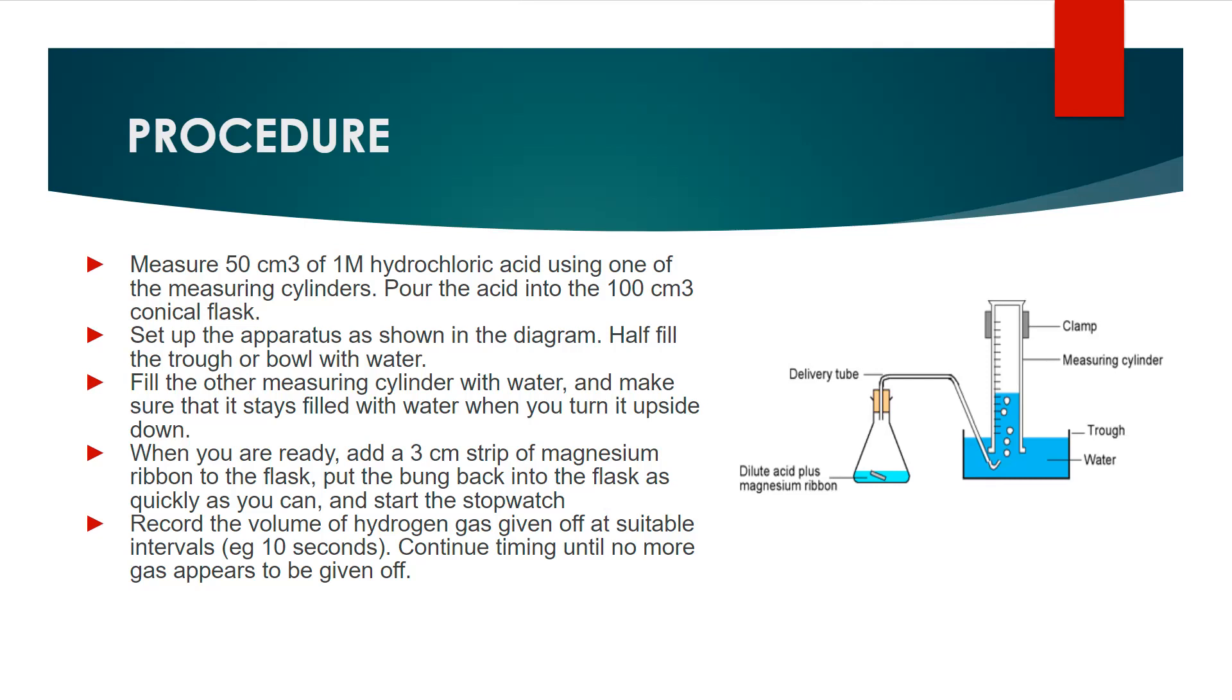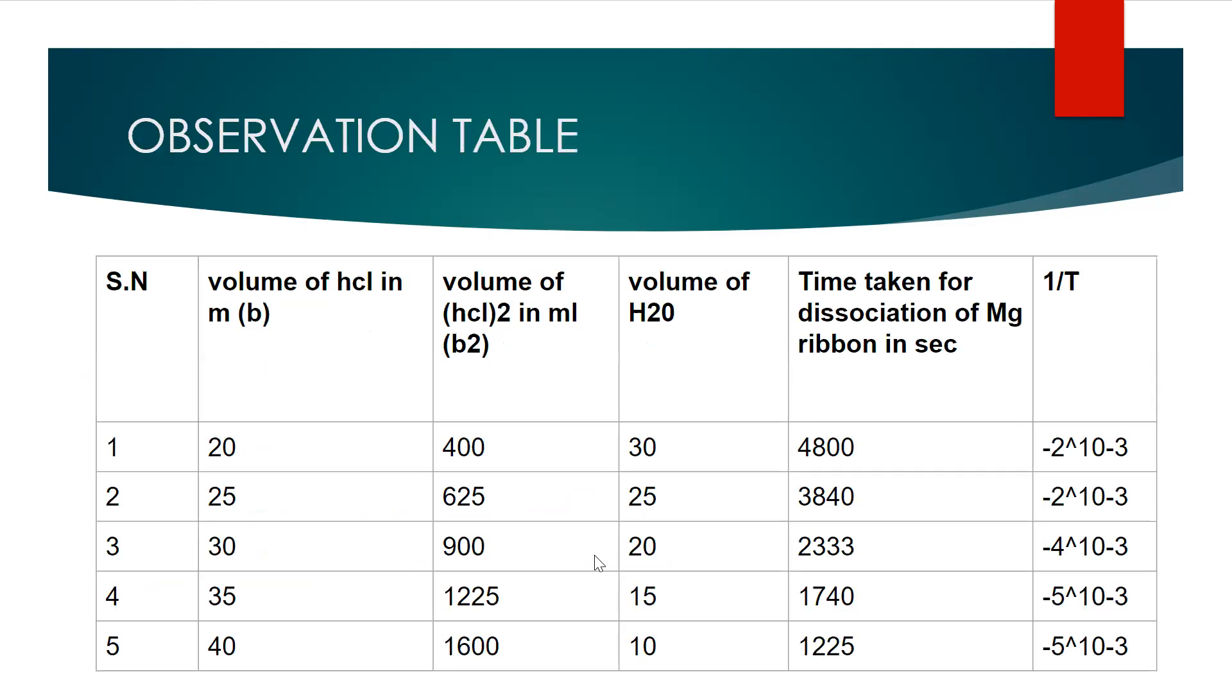There are some observations of this experiment. In column number one you will see volume of hydrochloric acid, in column number two you will see volume of hydrochloric acid in ml, in column number three you will see volume of water, and in column number four you will see the time taken for dissociation of magnesium ribbon in seconds.